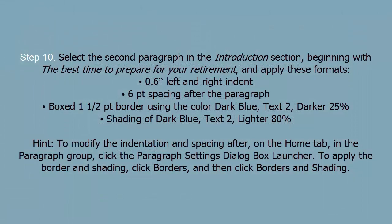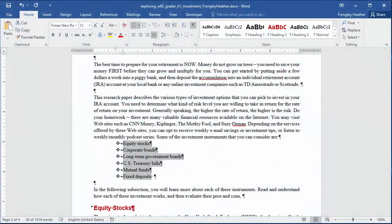Step 10: Select the 2nd paragraph in the Introduction section beginning with 'The best time to prepare for your retirement' and apply these formats: 0.6 left and right indent, 6-point spacing after the paragraph, boxed 1 and 1-half point border using the color dark blue text to darker 25%, shading of dark blue text to lighter 80%.